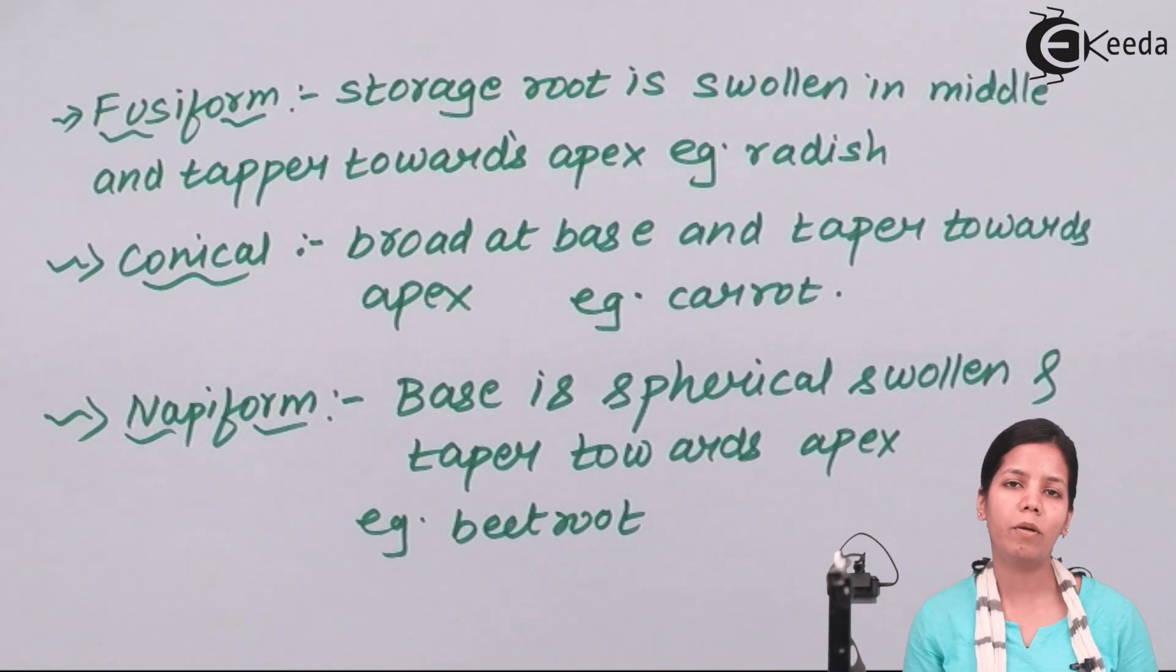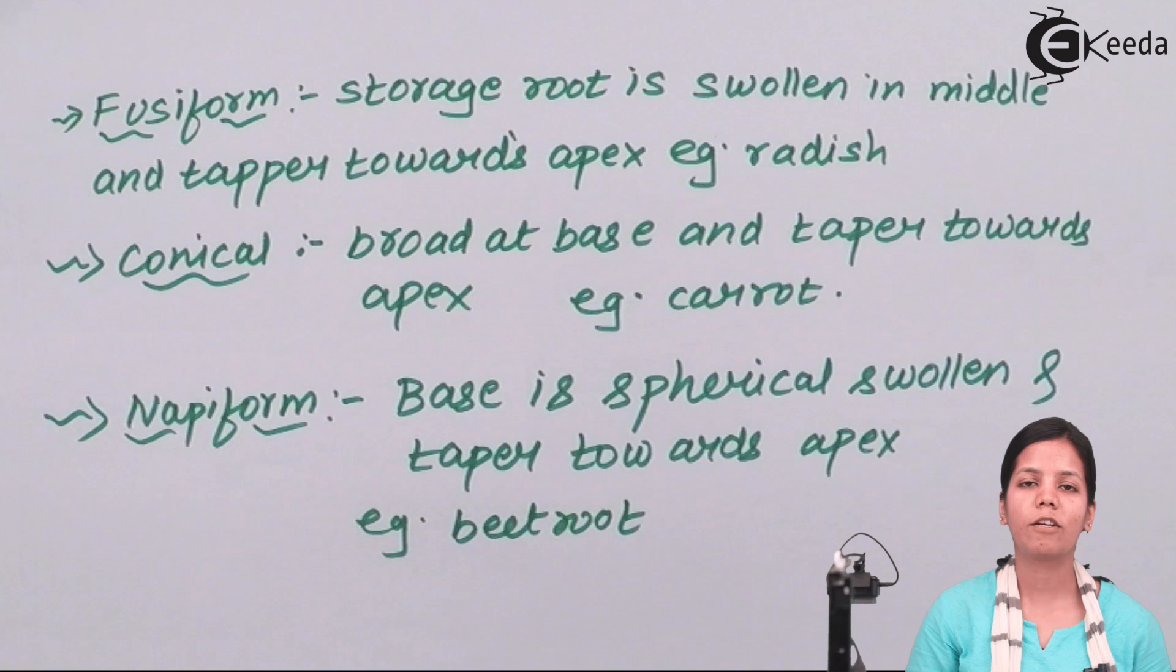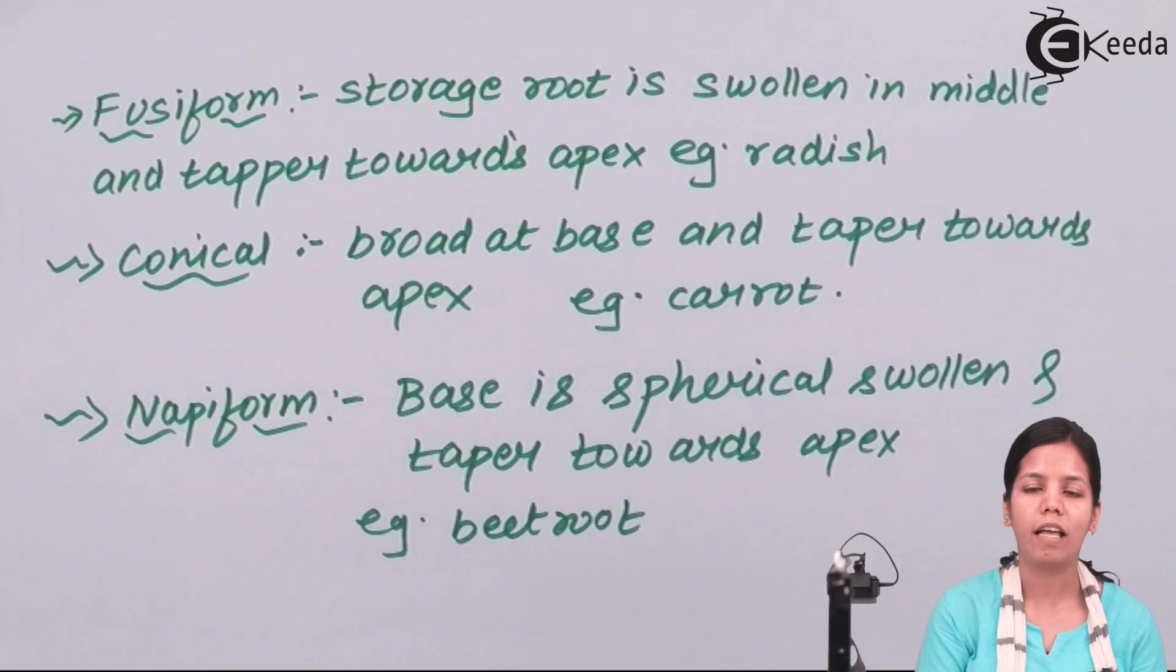Students, in this part of the chapter we have studied about tap root modifications for food storage, which are conical form, fusiform, and nappy form. I hope you all are clear about this concept. Thank you.